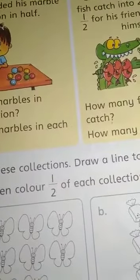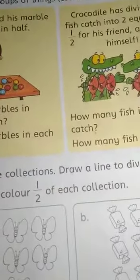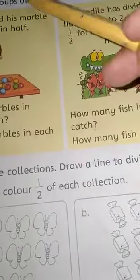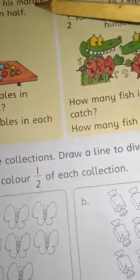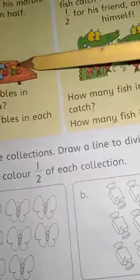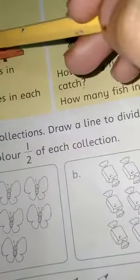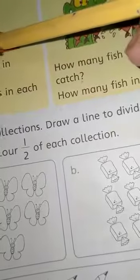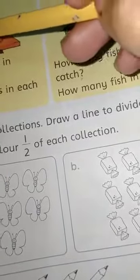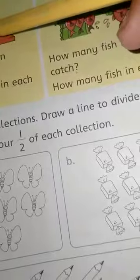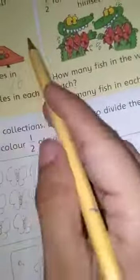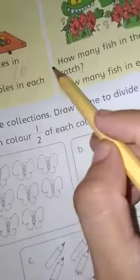Equal parts having collection. We can divide groups of things, collections, in half. Adal has divided his marble collection in half. How many marbles in Adal's collection? 1, 2, 3, 4, 5, 6, 7, 8, 9, 10, 11, 12, 13, 14, 15, 16. How many marbles in each half?